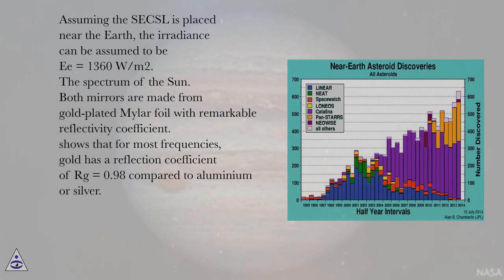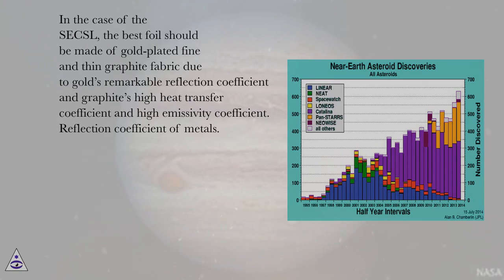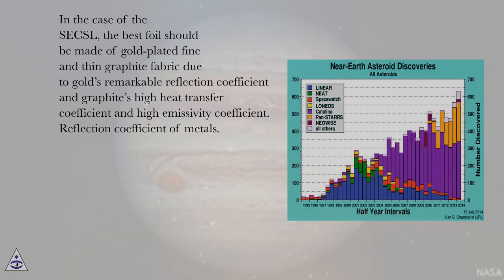Both mirrors are made from gold-plated Mylar foil with remarkable reflectivity. Gold has a reflection coefficient of Rg = 0.98, compared to aluminum or silver. The best foil should be made of gold-plated fine and thin graphite fabric, due to gold's remarkable reflection coefficient and graphite's high heat transfer coefficient and high emissivity coefficient.